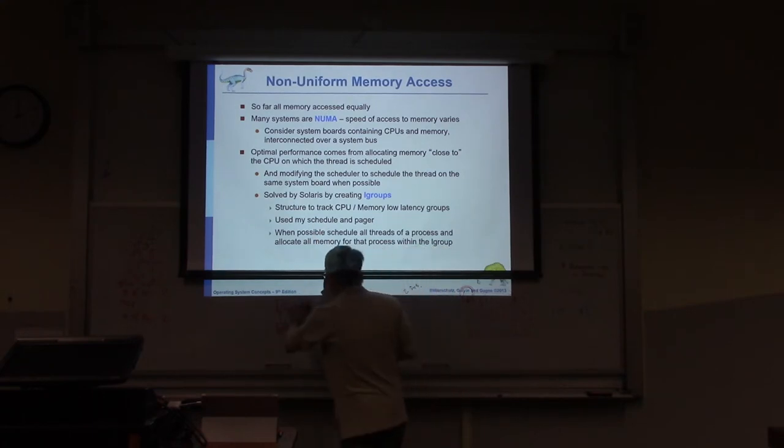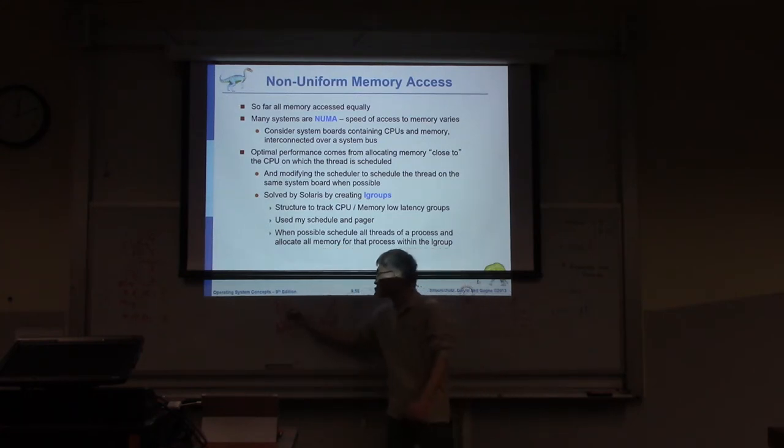So NUMA architecture suggests this CPU can access this memory, this one. However, when you access the data from the memory dedicated to another CPU, it will be slow. You need to admit that.